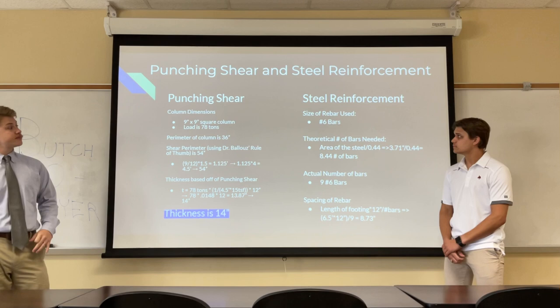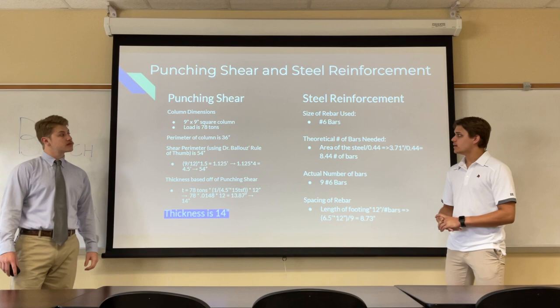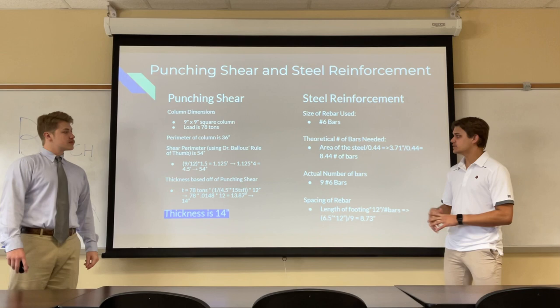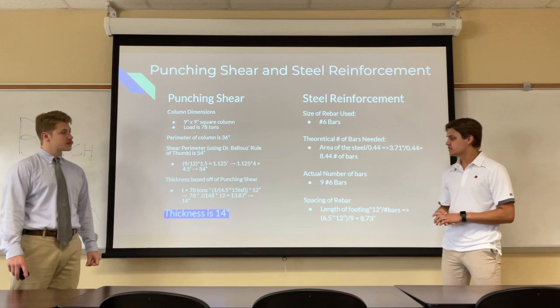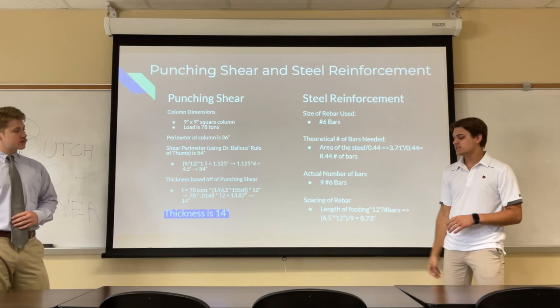From that we calculated our steel reinforcement. We decided to use number 6 bars. To find how many were needed, we took the area of steel divided by 0.4, which came out to 3.71 inches², corresponding to approximately 8.44 bars. Rounding up, we used 9 number-6 bars. The calculated spacing of that rebar is 8.73 inches.